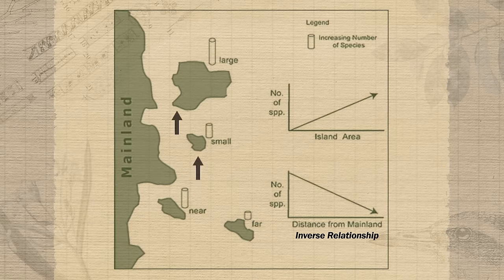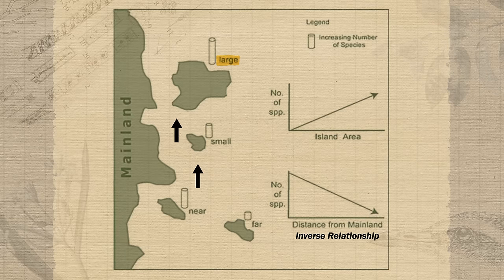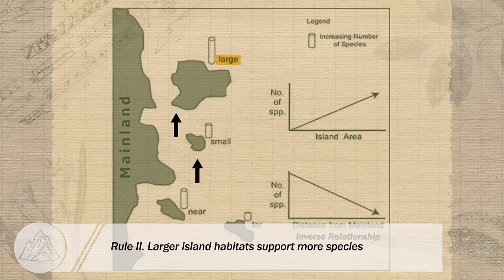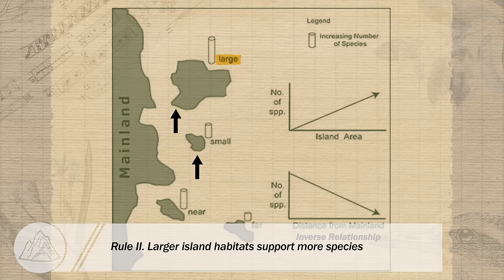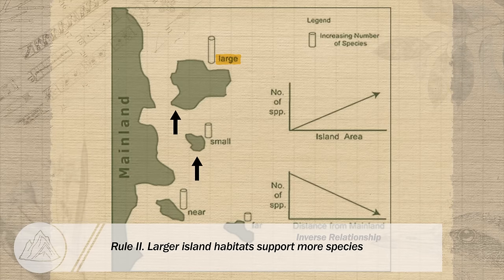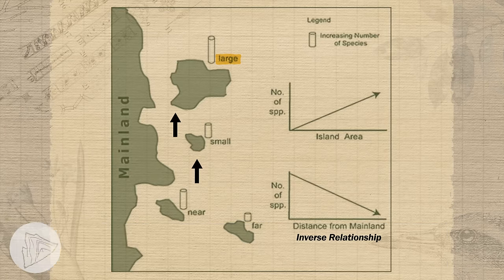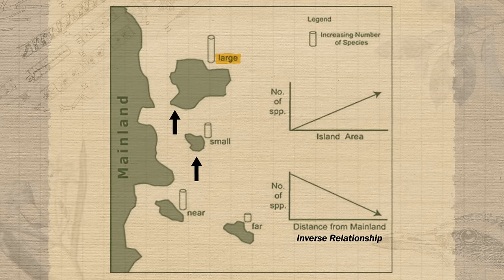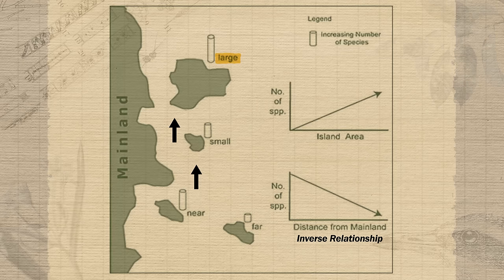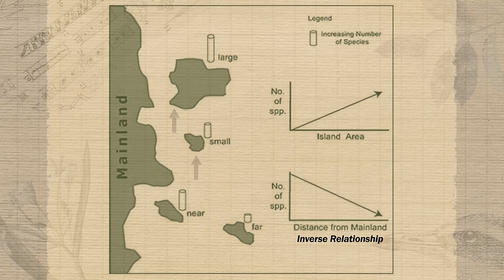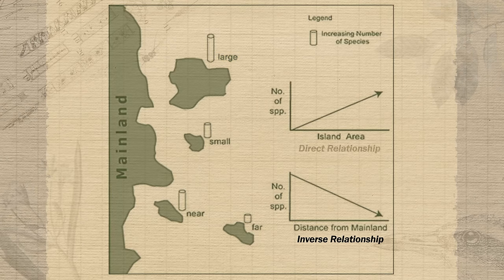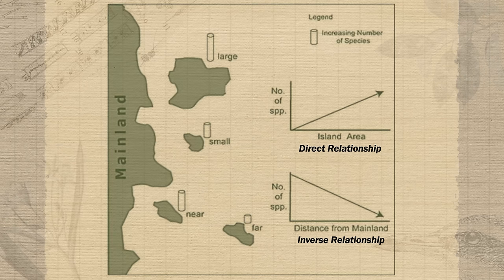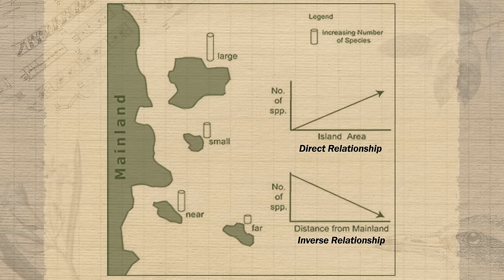If we look at two islands that are the same distance from the mainland, the larger island would likely have higher species richness. This is due to it having higher ecosystem or habitat diversity — with more space there's a greater variety of landscapes like forests, grasslands, or ponds, which means a wider variety of plant and animal species can be supported. So if we plot island area and number of species on a graph, we see a direct relationship: as island area increases, so too does the number of species supported.